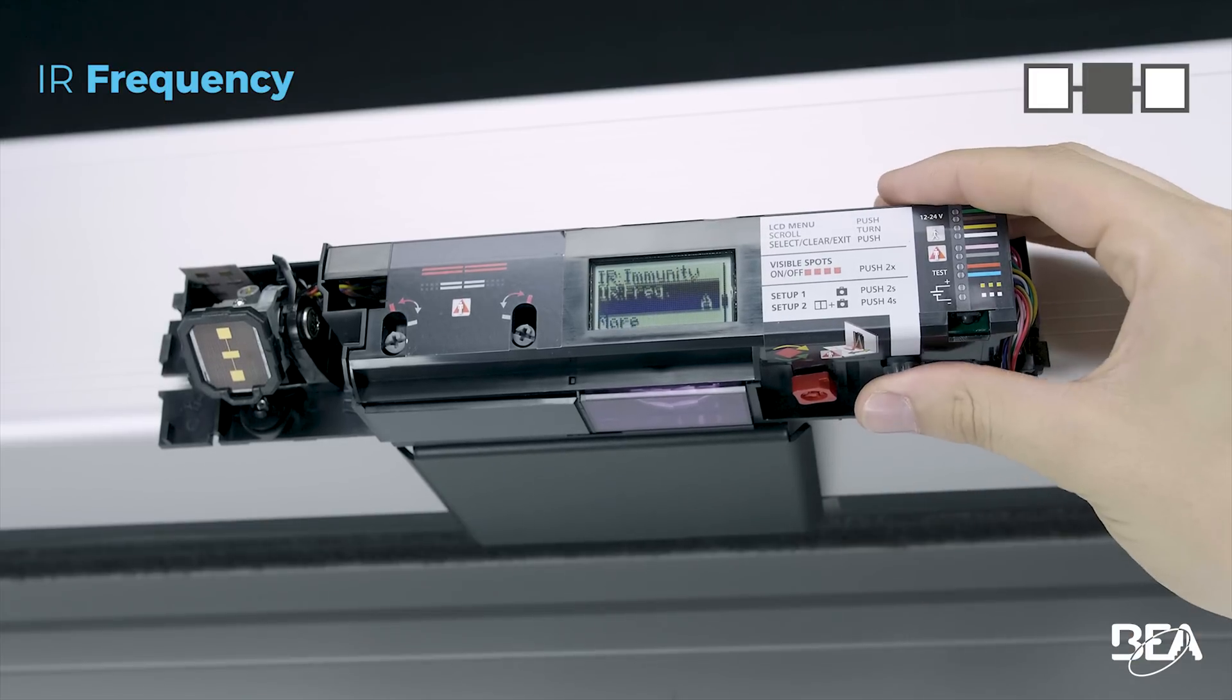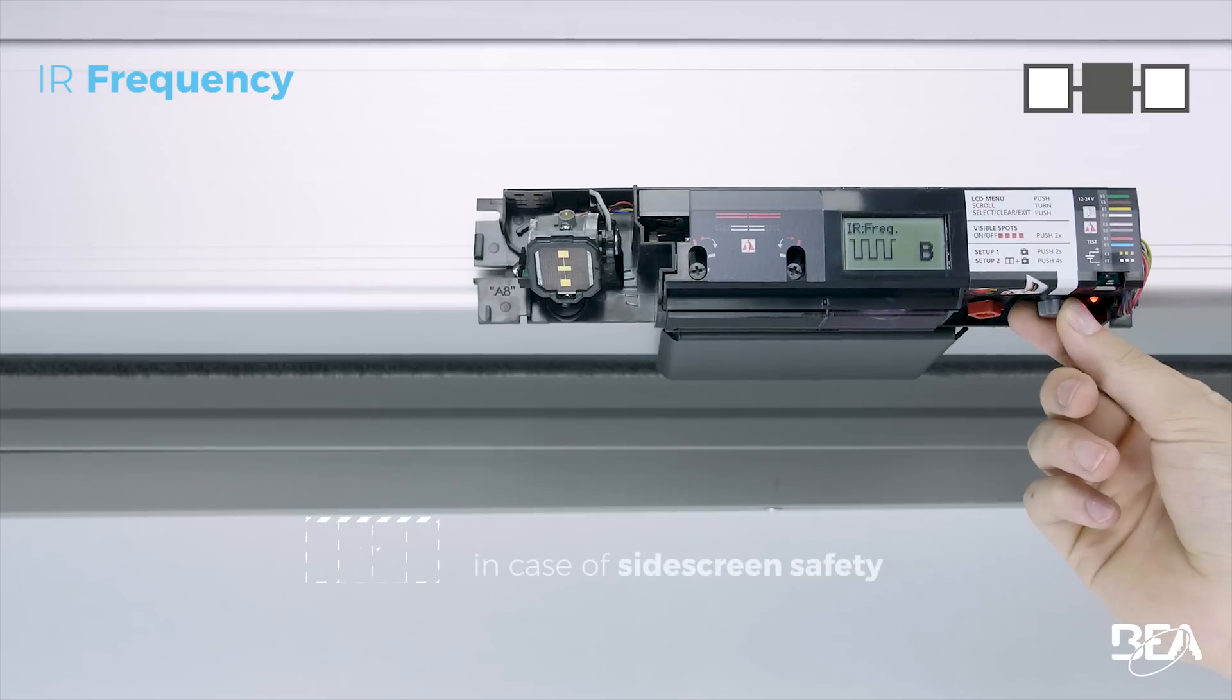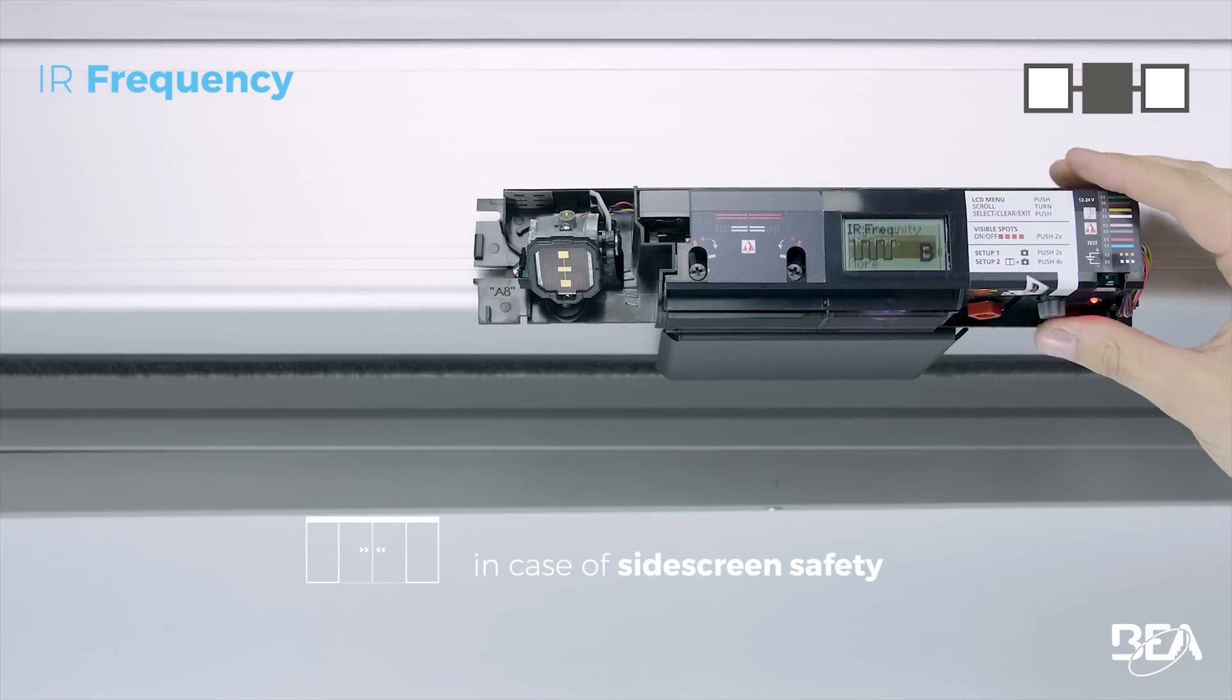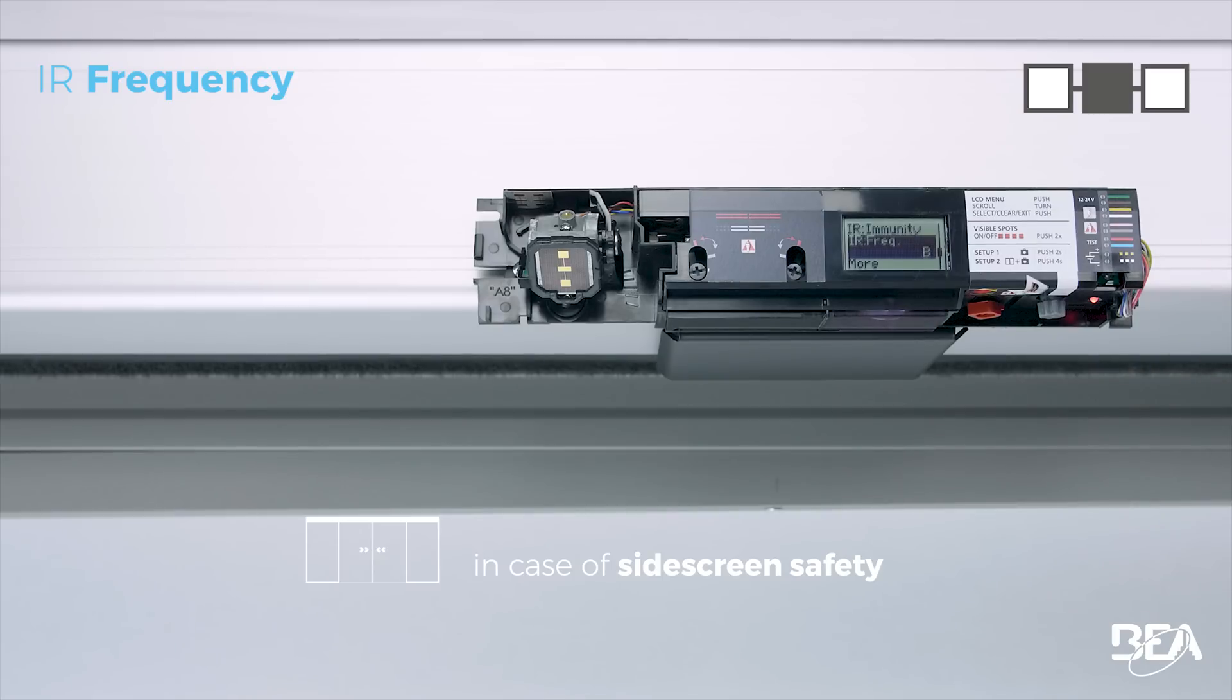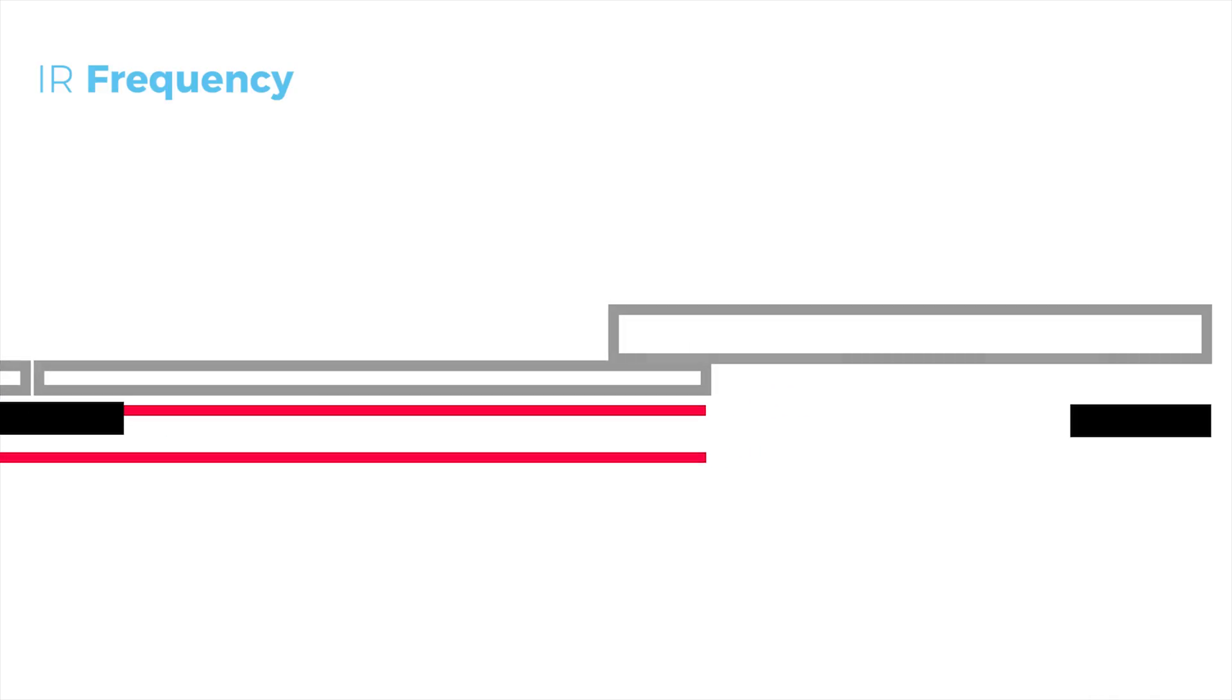The IR frequency parameter is used for when sensors are installed close to each other or in a case of side screen safety. To avoid crosstalk between the sensors, pay attention that the curtains do not overlap and select a different frequency on each sensor.